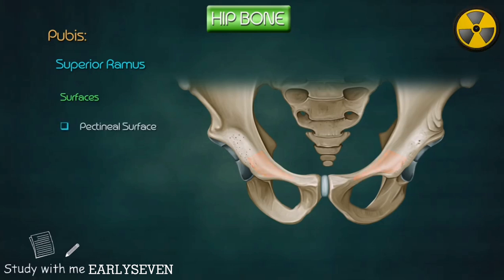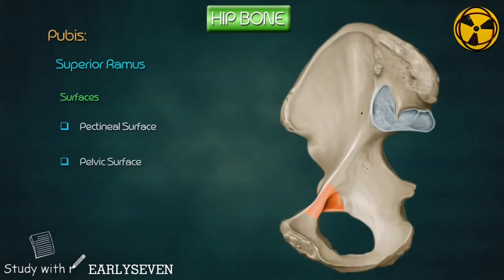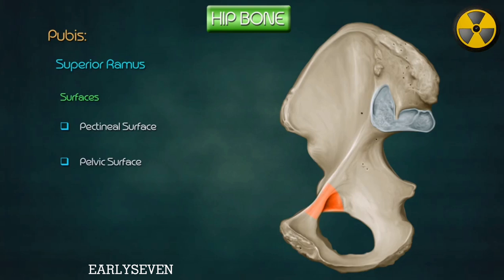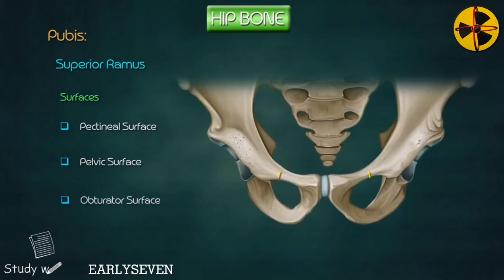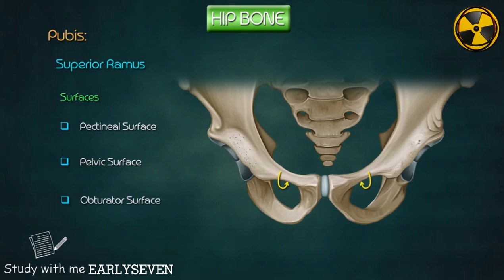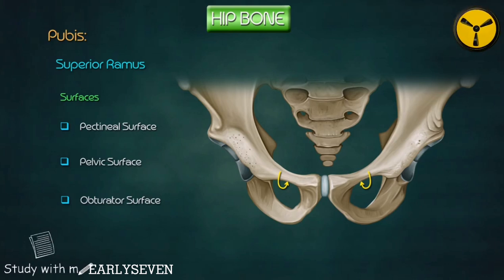Surfaces. The pectenial surface faces anteriorly and lies between the obturator crest and the pectenial line, extending from the pubic tubercle till the iliopubic eminence. The pelvic surface faces upwards and backwards, lies between the pectenial line and the inferior border, and is continuous with the pelvic surface of the body of the pubis. The obturator surface faces downwards and backwards, lies between the obturator crest and the inferior border. A groove on this surface is turned into a canal by the obturator muscles and membrane, transmitting the obturator nerve and vessels.